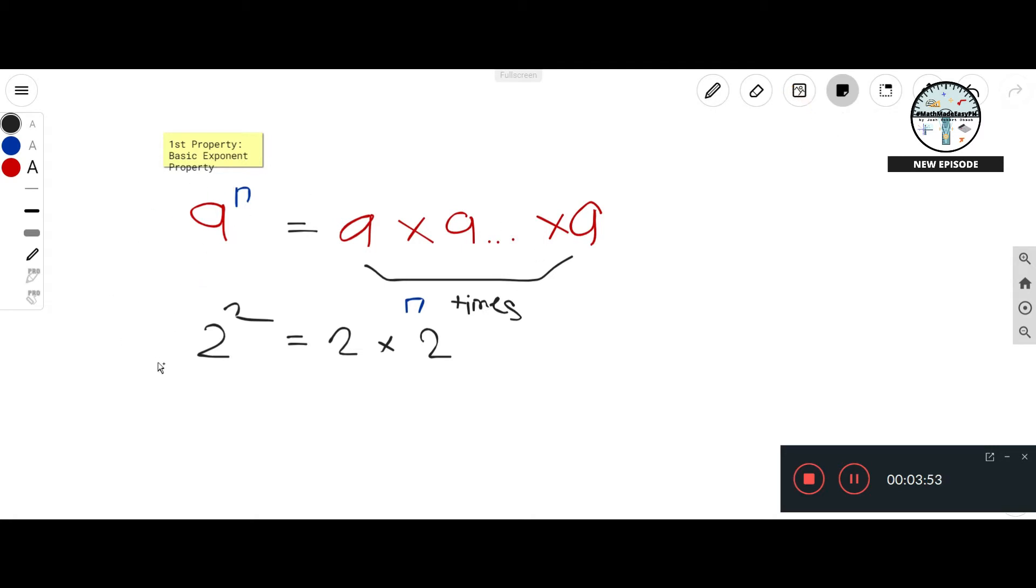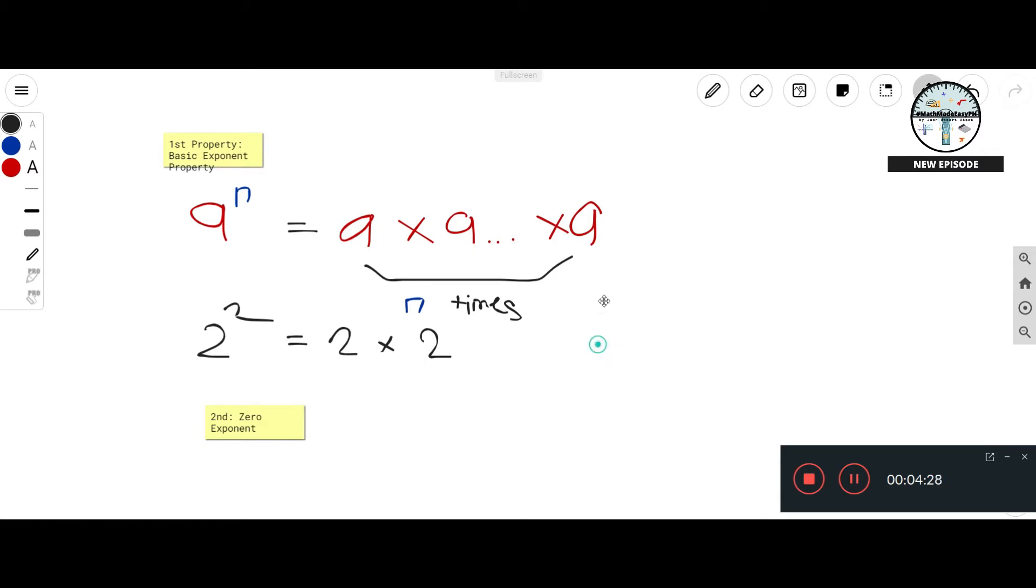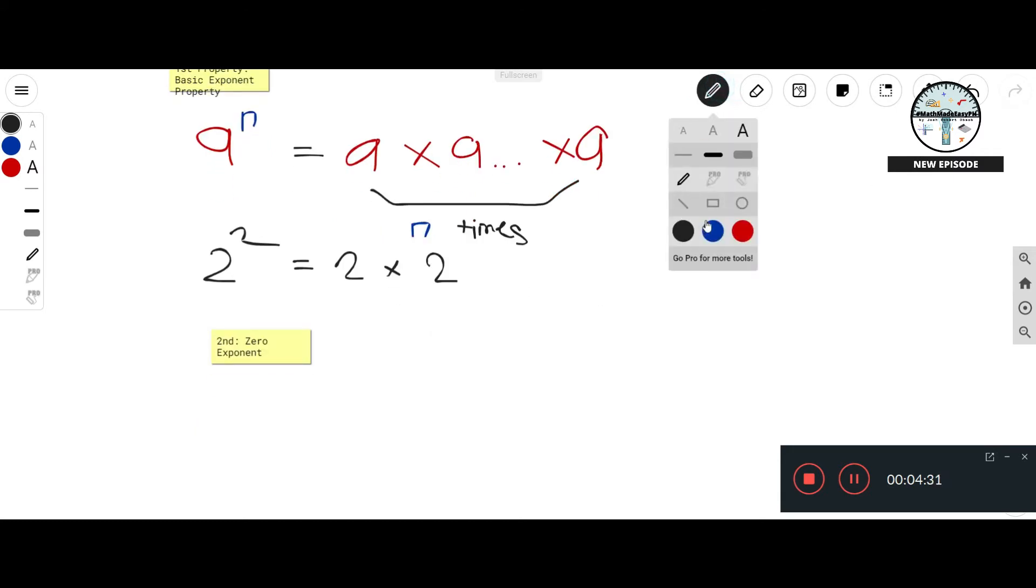The next property would be the zero exponent. And after that we will just solve some examples. So the examples would be—most of them are not really algebra, more on like numbers. We will just solve a few algebra expressions that have exponents.